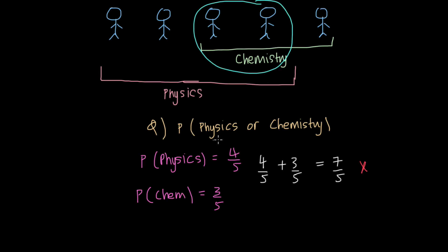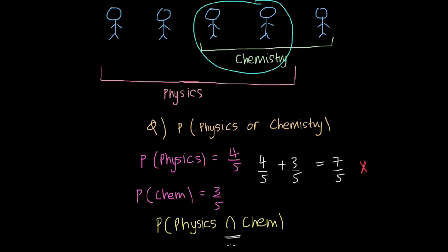When we have such a situation, we call it non-mutually exclusive, which means that both events — physics and studying chemistry — can occur at the same time. When we have such a situation, this part is correct, but we have to do an additional step of subtracting the probability of studying both physics and chemistry. This intersection sign can be used to represent 'and'. For non-mutually exclusive events, we have to find the probability of the repeating event and subtract it from this value.